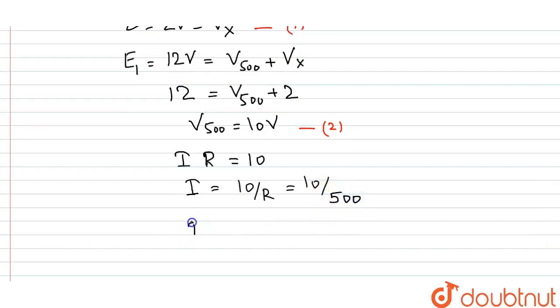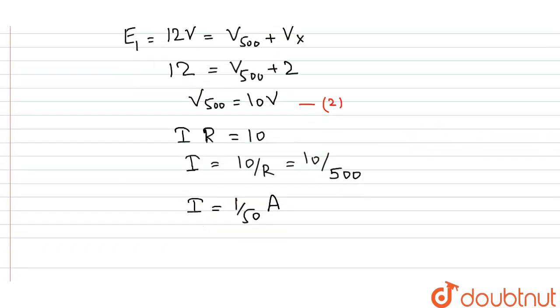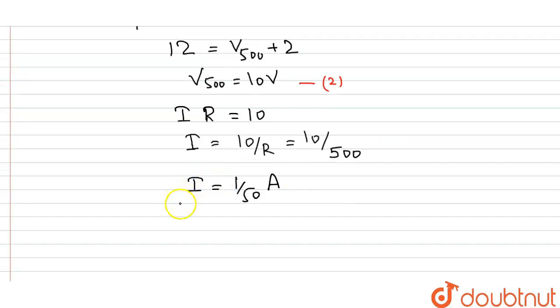So I will get here the value of current that equals 1 by 50 ampere. Now we can find the value of the X resistance. So it will be equal to V by I, simply by using the formula for resistance.